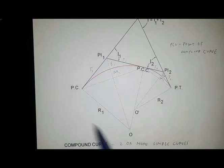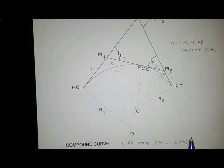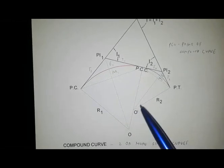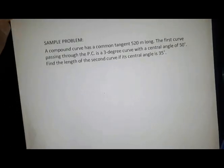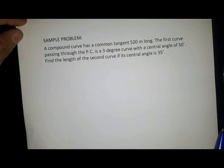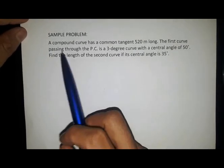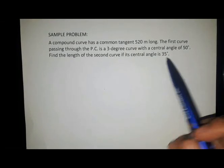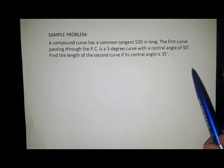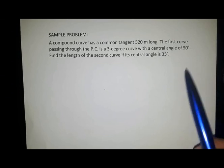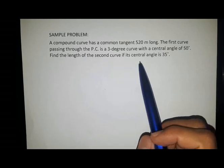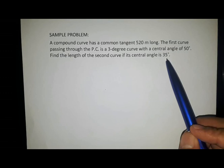To further understand the compound curve, we will solve one problem. The problem states: a compound curve has a common tangent 520 meters long. The first curve passing through the PC is a 3-degree curve with a central angle of 50 degrees. Find the length of the second curve if its central angle is 35 degrees.